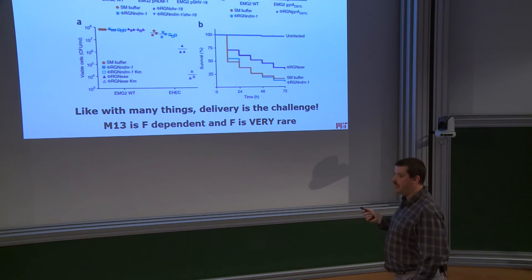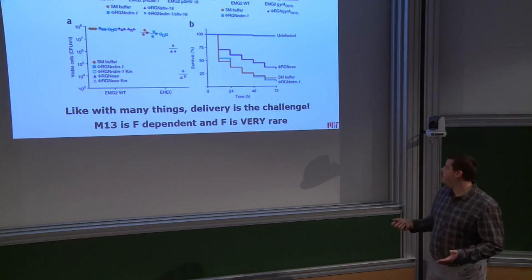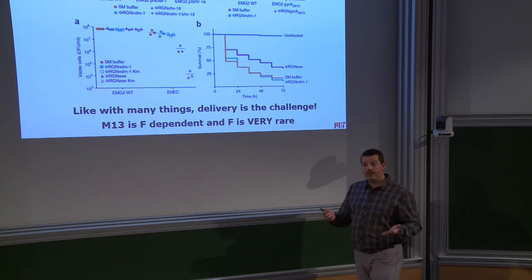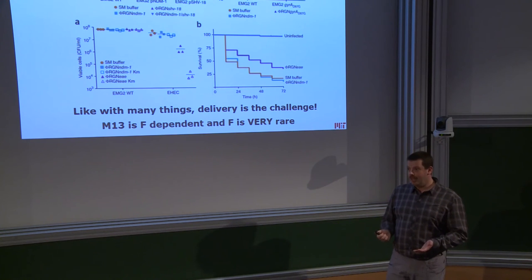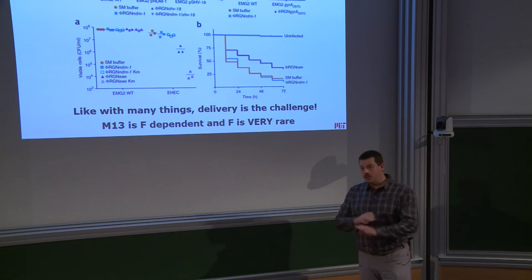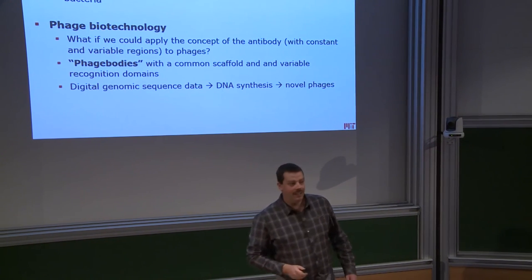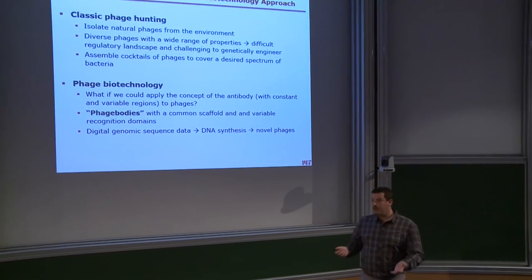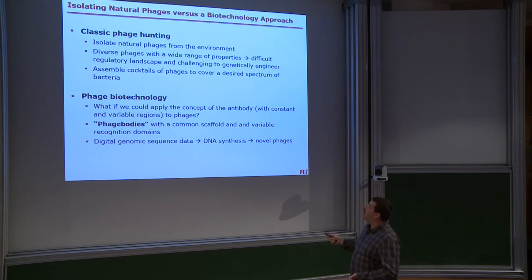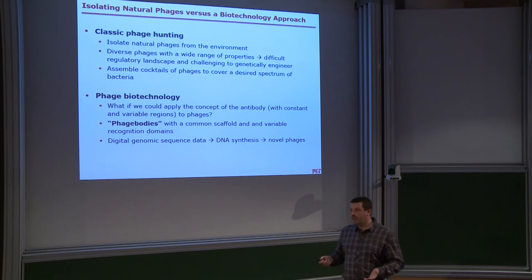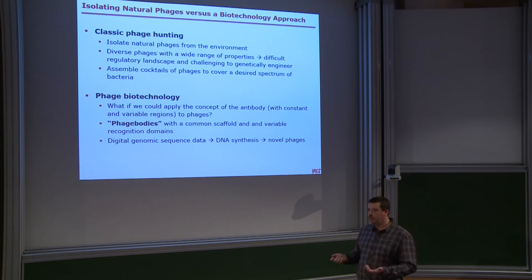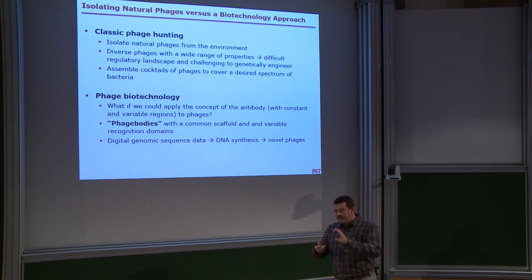There is one major flaw with this project: M13 is wonderful for molecular biology — it's small and easy to engineer — but it is absolutely F-plasmid-dependent, and F is extremely rare in nature. So this is a very nice system in the lab but absolutely useless in real life. We need to find other delivery vehicles. Phages are probably one of the most efficient systems for delivering DNA to bacteria. Conjugation requires too intimate contact to be useful in the context of a microbiome with billions of bacteria, making the probability of close enough encounter between donor and recipient far too low.